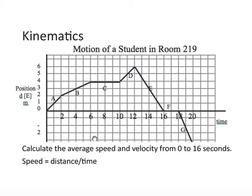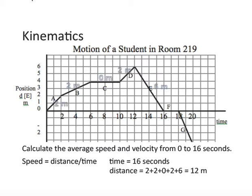We know the formula for speed. That's distance over time. The time is 16 seconds. That's obvious from zero to 16 seconds. It's got to be 16 seconds. And the distance: how do we get the distance? Well, notice we label each section of the graph. Two meters, two meters, zero, two, and six.